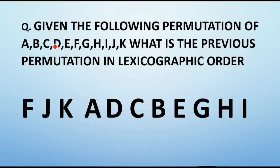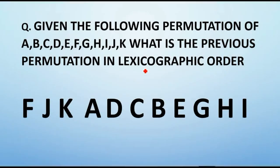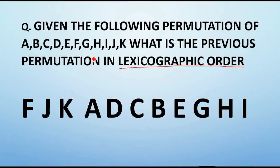First of all, let's understand the question. Given the following permutation of letters A to K, what is the previous permutation in lexicographic order? Lexicographic order means dictionary order. So in order to find the previous permutation, I have considered this pattern.